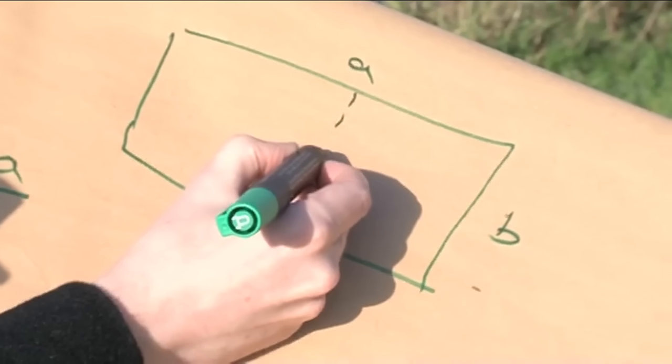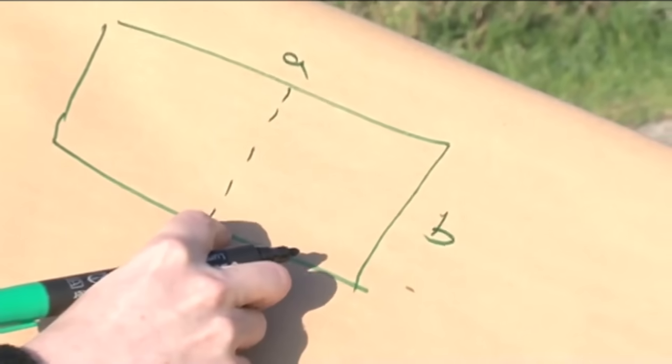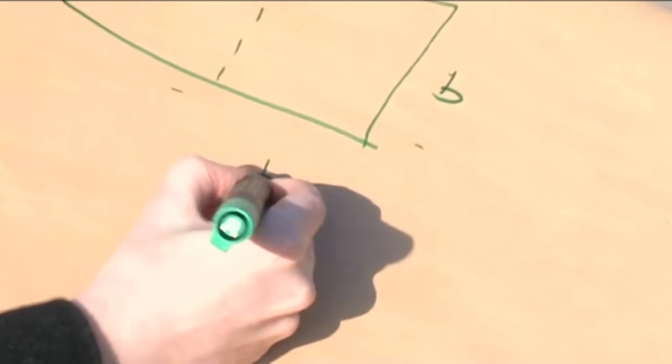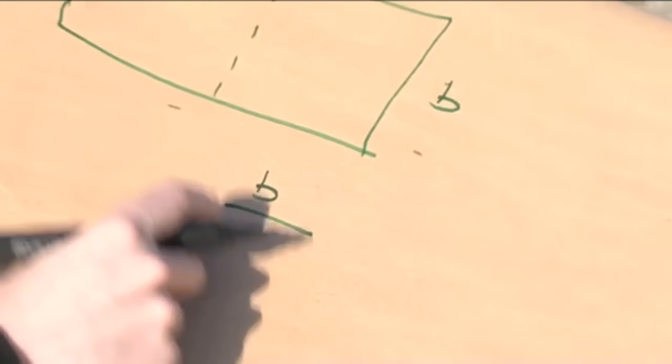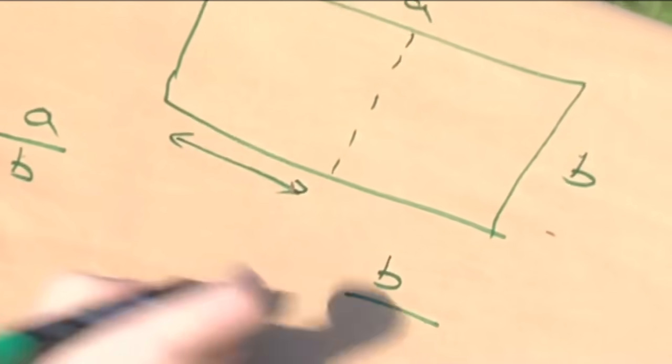If I cut this in half, I want this now to be the long edge. So B is now the long edge. The short edge is actually half of A. It's this side. Half of A.